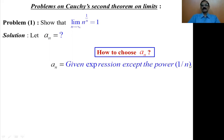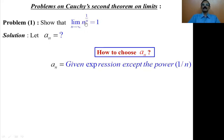Leaving the limits, the given expression is n to the power 1 by n. We have to leave the 1 by n part. What is left over? Only n is left over. Therefore, a_n is n.